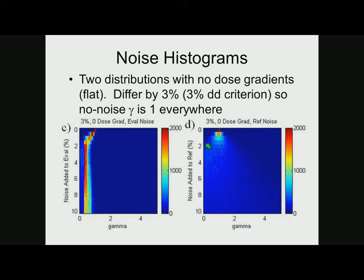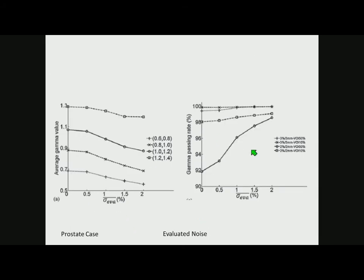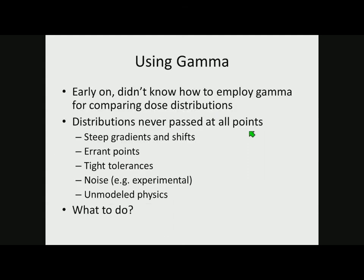Graves looked at clinical cases — a prostate case — to examine what happens when you add noise. Adding noise to the reference distribution: the average gamma values stay roughly constant, going up slightly, and passing rates get a little worse. The opposite happens with the evaluated distribution: as noise is added, gamma starts to drop and passing rates get artificially larger. So gamma gets artificially smaller with noise in the evaluated distribution and just becomes noisy with noise in the reference.